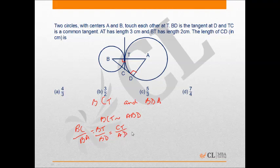Now, let us assume that CT is of length X cm. CD and CT are tangents drawn from point C to the same circle. Therefore, CT is equal to CD equals X cm.